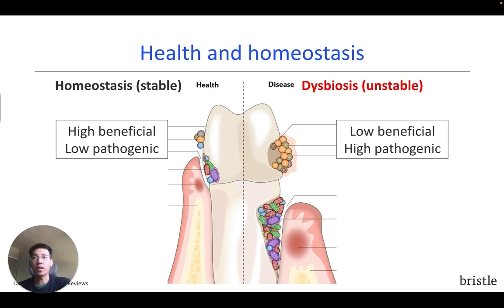In this figure, you can see how this community drives health and disease, where on the left we have a stable microbiome helping to maintain health, and on the right we have a dysbiotic microbiome driving disease.